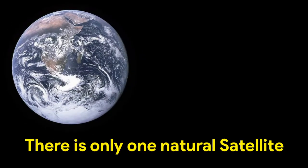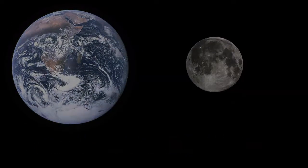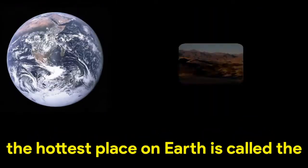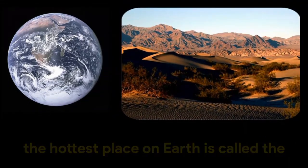There is only one natural satellite of the planet Earth and that is the Moon. Earth has a powerful magnetic field. The hottest place on Earth is called the Death Valley.